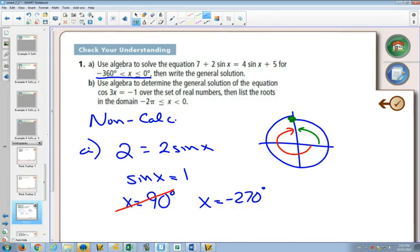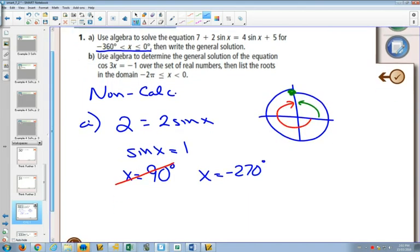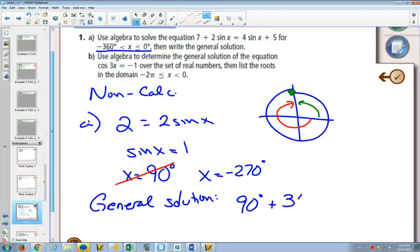Now if you were asked for the general solution, because it says then write the general solution, the way that we wrote out one of the ways to find your general solution is to find all of your solutions between 0 and 360 or 0 and 2 pi, and then add 2k pi, but this is degrees now, so then we're going to add k times 360 to each of our answers. So how many answers did we have between 0 and 360? One. Just one. So the general solution will be 90 degrees plus 360 times k or k times 360.